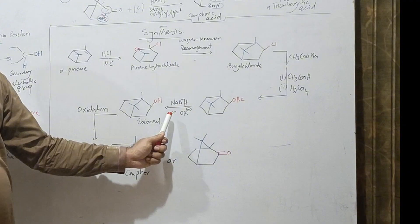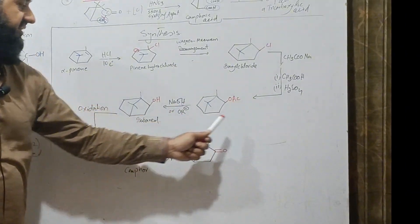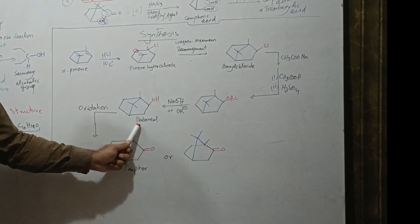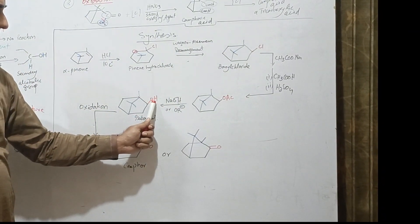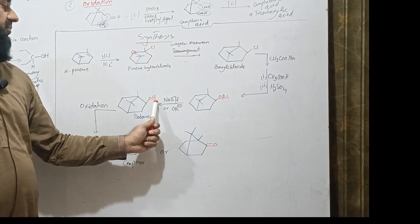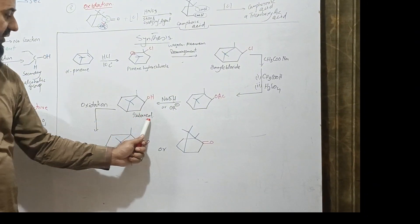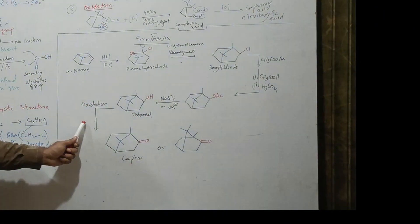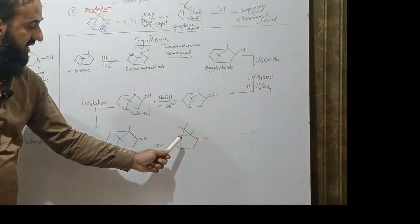Which upon reaction with sodium hydroxide or alkoxide base, then acetic acid is removed and we get isobornol. Isobornol, as it contains hydroxyl group, and we have studied that hydroxyl group upon oxidation gives carbonyl group. So this isobornol upon oxidation gives camphor. So camphor can also be written with this structure.